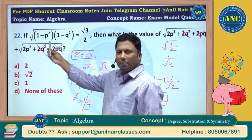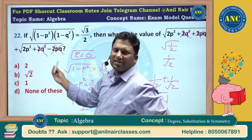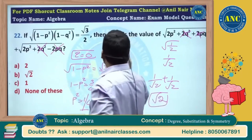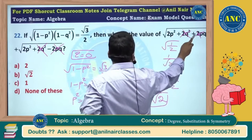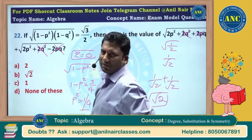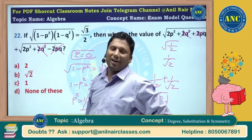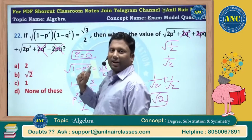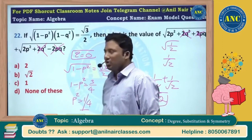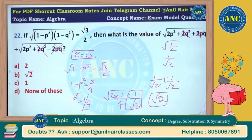Making the dependent variable 0 — either make p = 0 or q = 0 — because it's a homogeneous function, p can be replaced with q and q can be replaced with p; the numerical value of the question does not change. I hope question number 22 is clear to you.